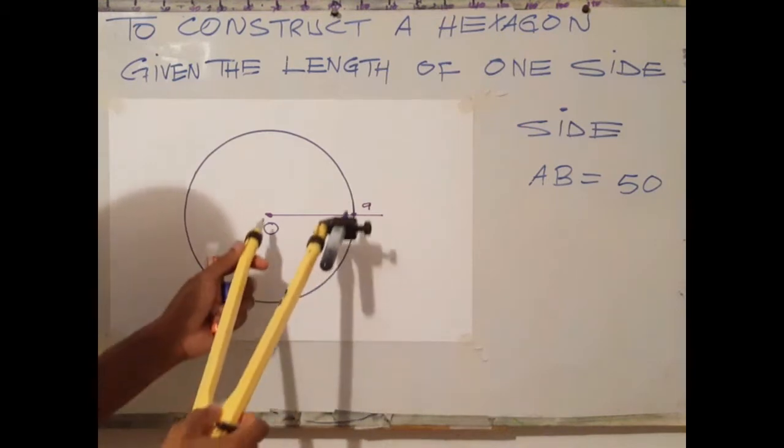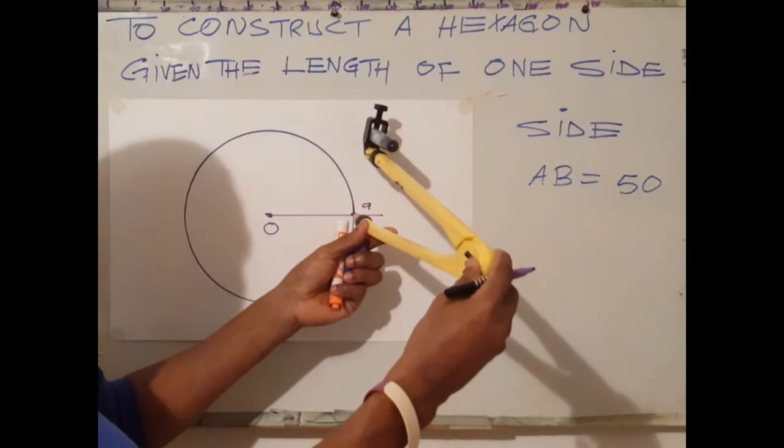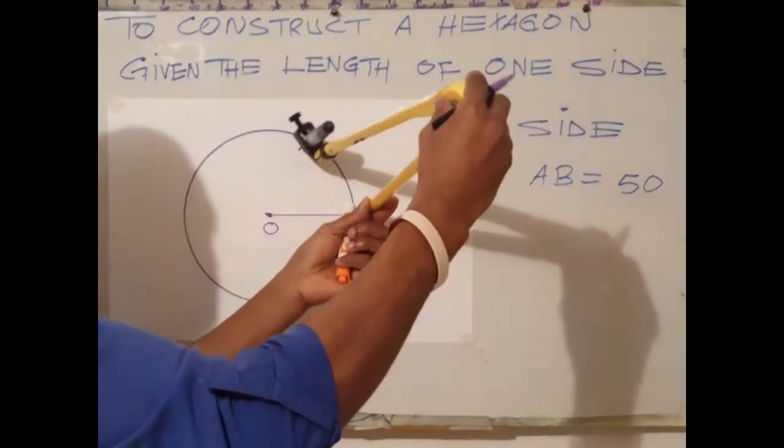Using the same radius that you use to draw the circle, use A as center, scrub an arc on the circumference.